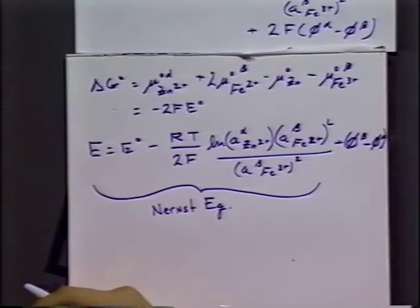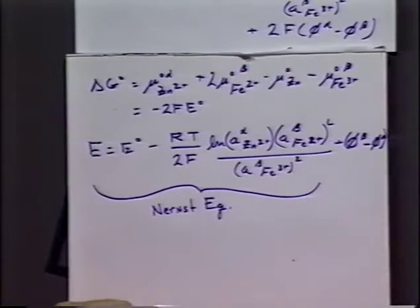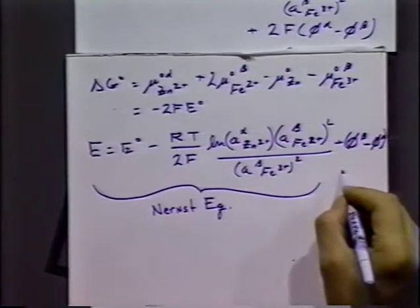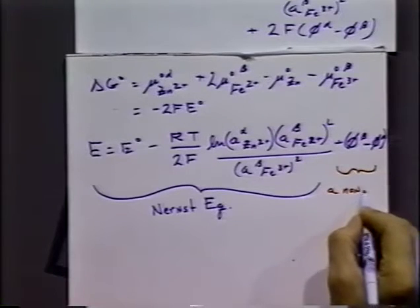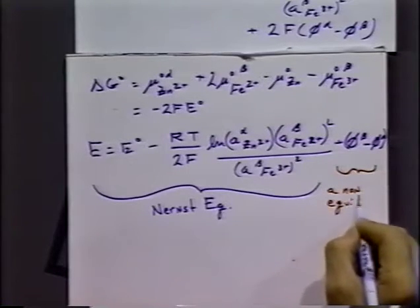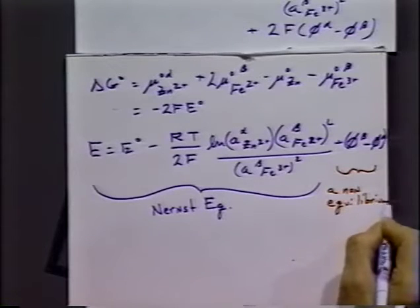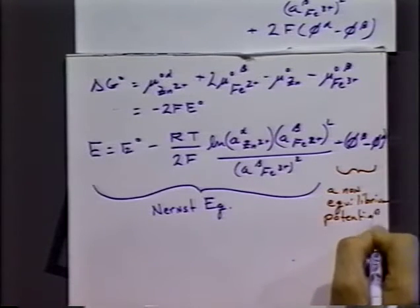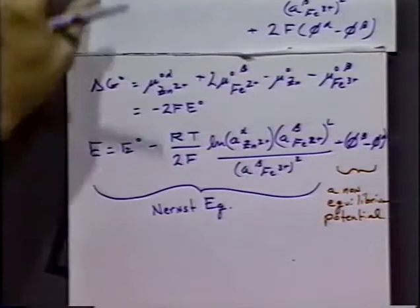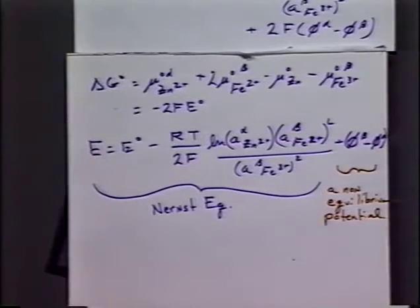Using the electrochemical potentials, we can derive the Nernst equation. However, we've got something a little bit extra here that's not the Nernst equation. And this turns out to be a non-equilibrium potential. And that has to do with the fact that there exists now a potential difference between our two phases.